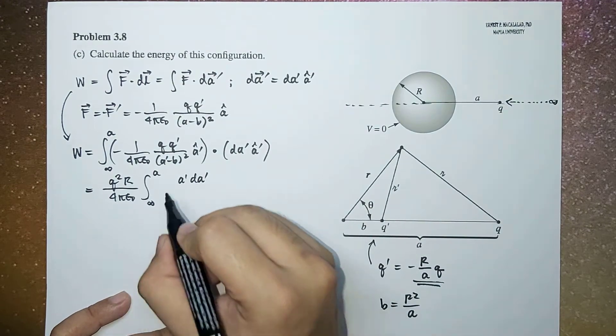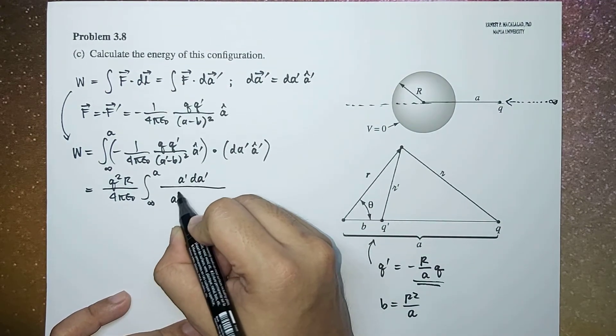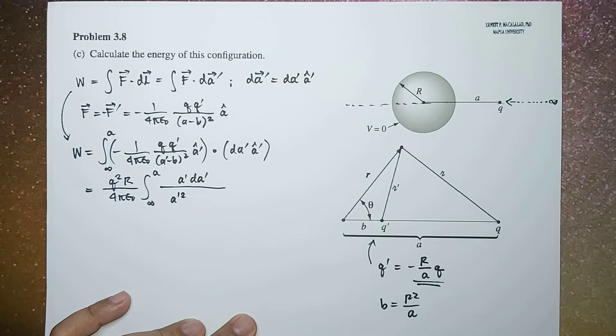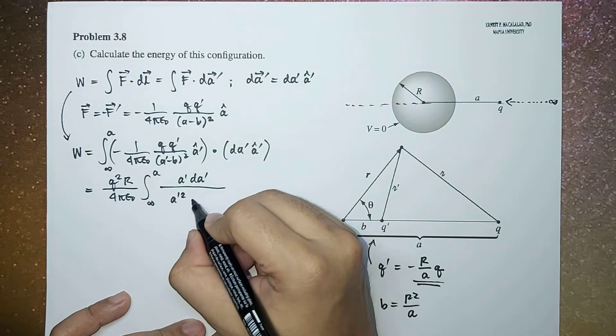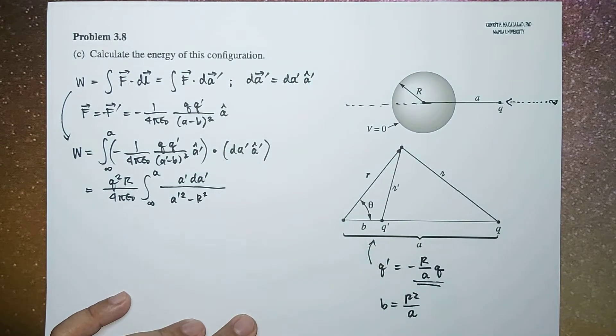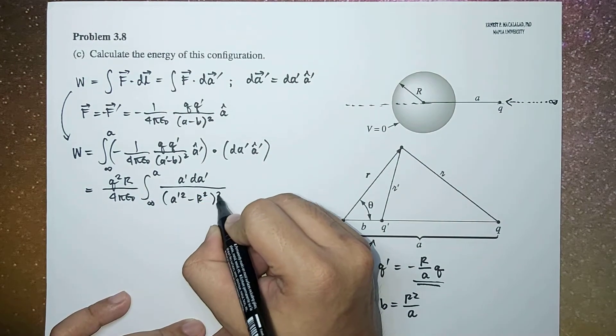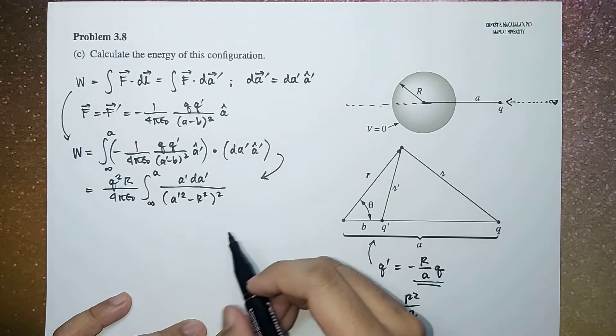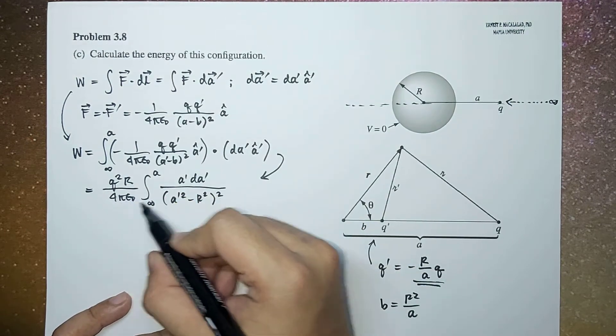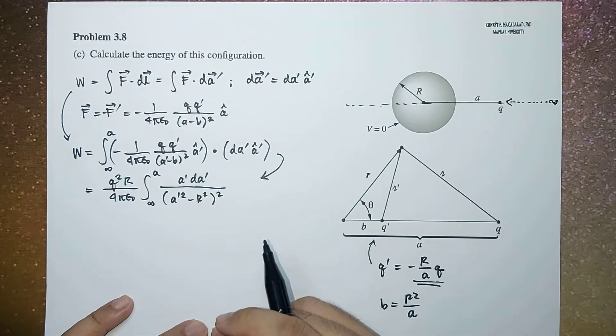da prime divided by (a prime squared minus r squared) squared. So it's now your responsibility to arrive at this expression from this expression.